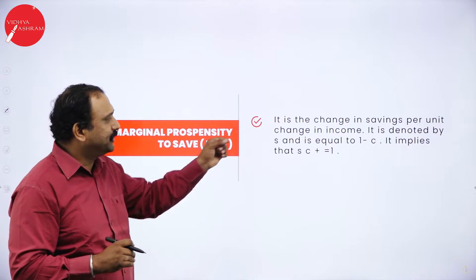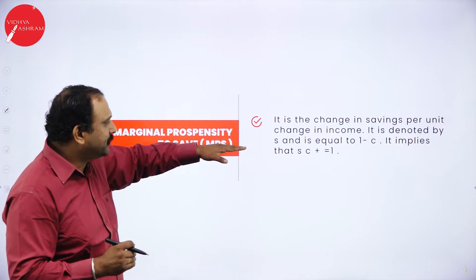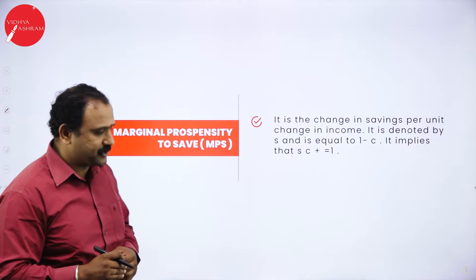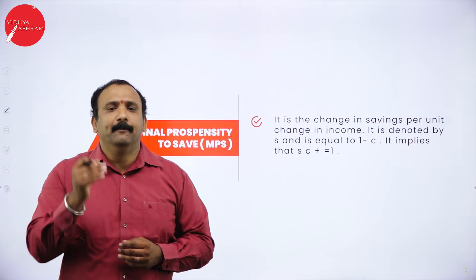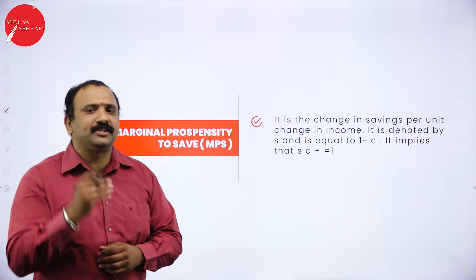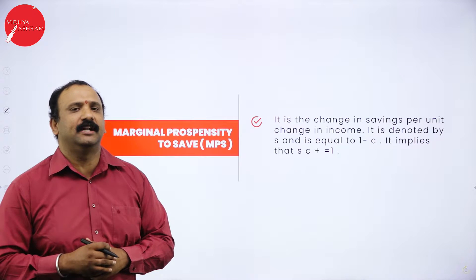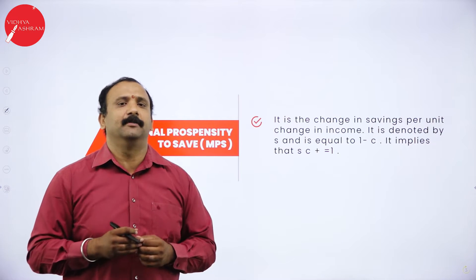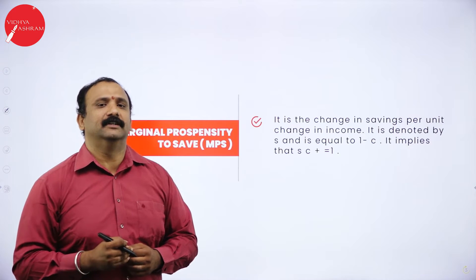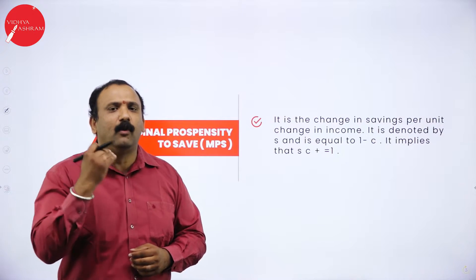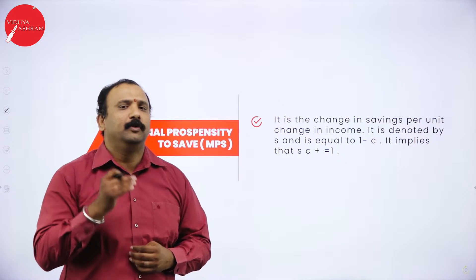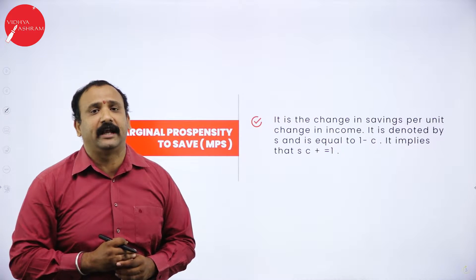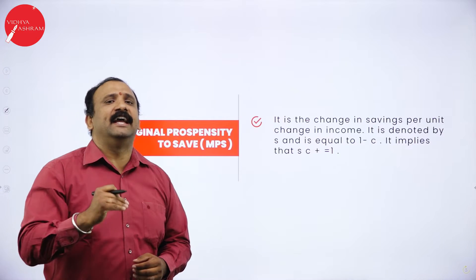Marginal propensity to save is the change in savings per unit change in income. It is denoted by S and it is equal to 1 minus C. If you look at the importance of savings in our day-to-day life, we always question ourselves: can I save 1 rupee more than the previous month? This concept dwells in macroeconomics — with the rise in income, we want to save more.